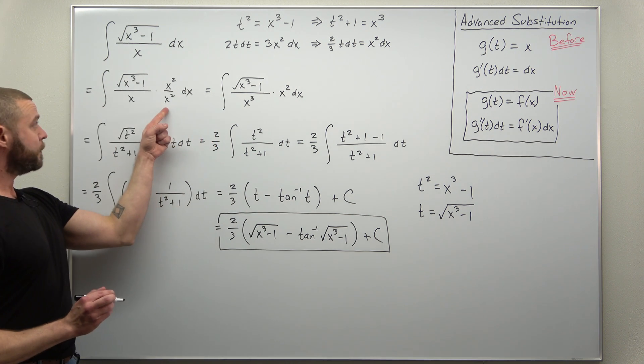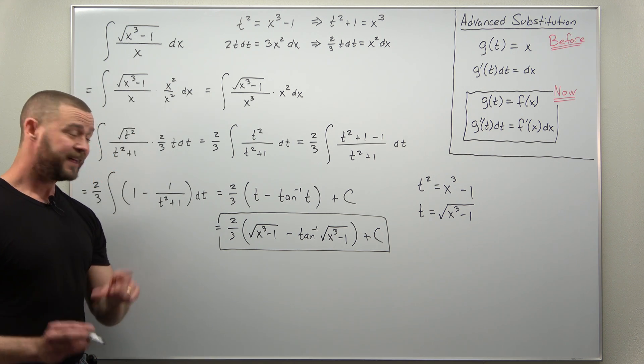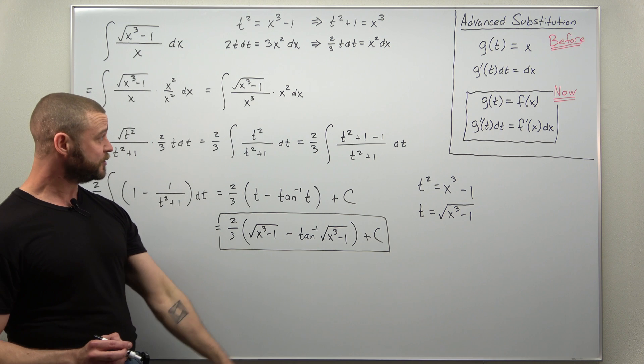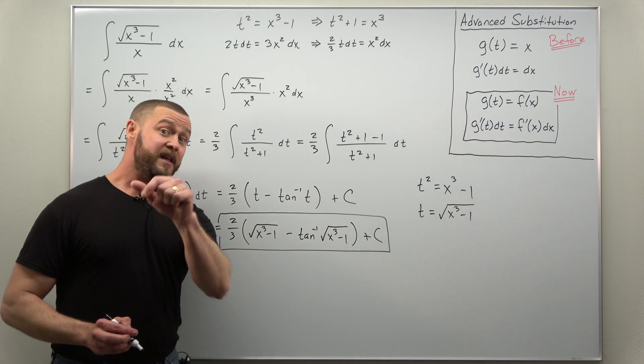Second, we multiplied by 1 right here, x squared divided by x squared. And then the other technique we used was adding 0, adding 1 and then subtracting 1.